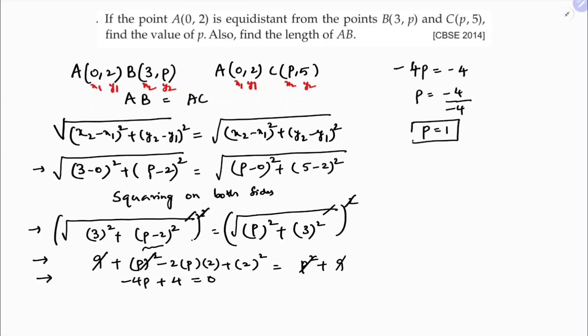Also find the length of AB. Length of AB. So here A is 0, 2 and B is 3 comma P, so 3 comma 1. So we need to find the distance.